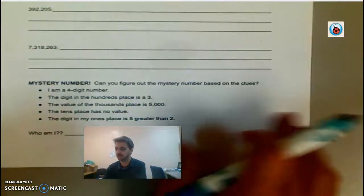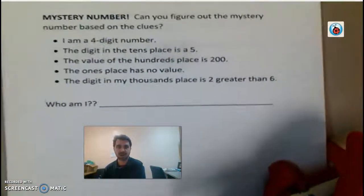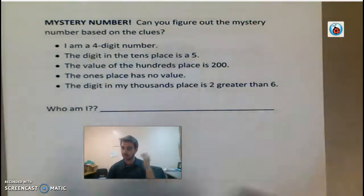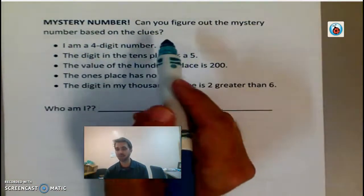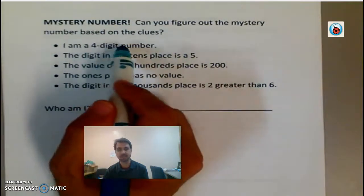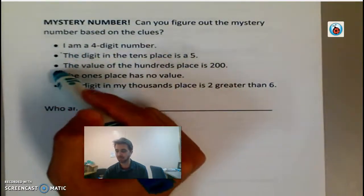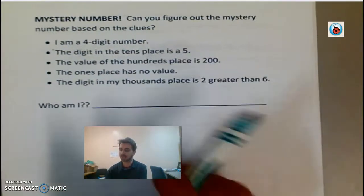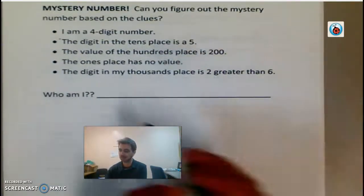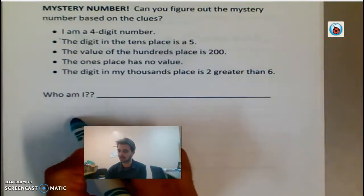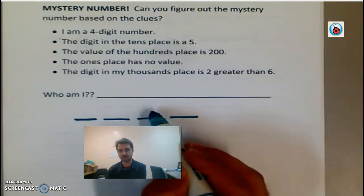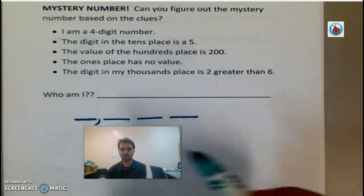So here's how that works. I'm actually going to not do that one, so you can do it, but I'm going to show you a different one. Okay, so this is just a practice one. You don't have to do this. I'm just going to do it to show you how it works. So mystery number. Can you figure out the mystery number based on the clues? So there's one, two, three, four, five clues. So the first clue is I am a four-digit number. So the best strategy for that, boys and girls, is to write down four places. So one, two, three, four. So I have my ones, tens, hundreds, thousands. I'm going to put a comma right there.